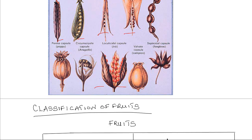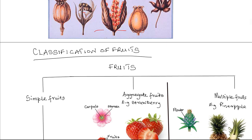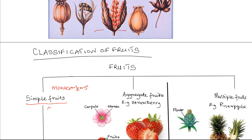Fruits can also be classified in a number of ways. There are three categories of fruits. One, we have the simple fruits. Simple fruits are derived from a single flower in which the gynoecium may be monocarpous — that is only a single carpel — or the single flower may have a syncarpous gynoecium, that is there are several fused carpels. That is the first class of fruits: ones that develop from a single flower, which make up the simple fruits.